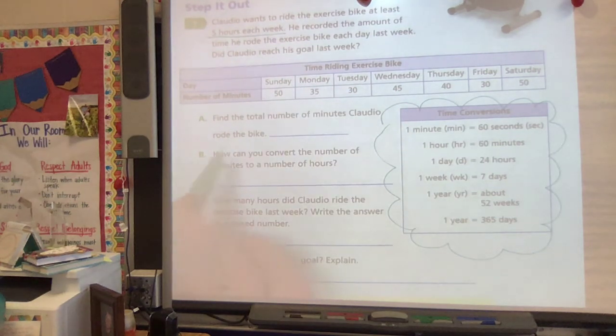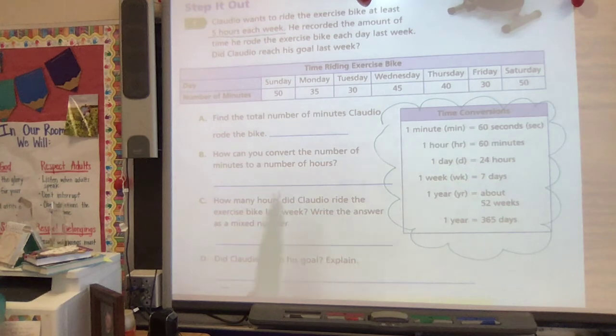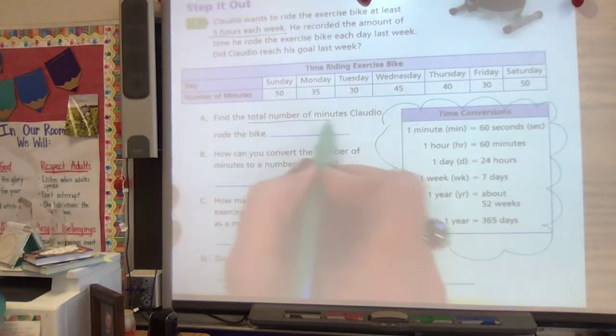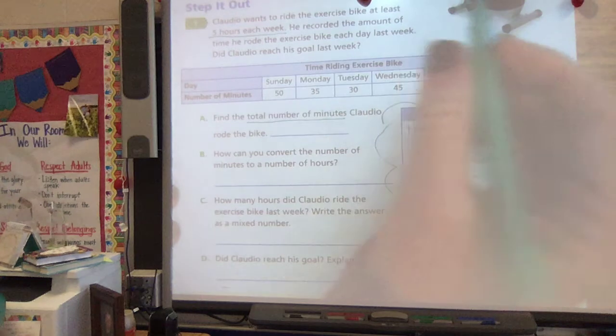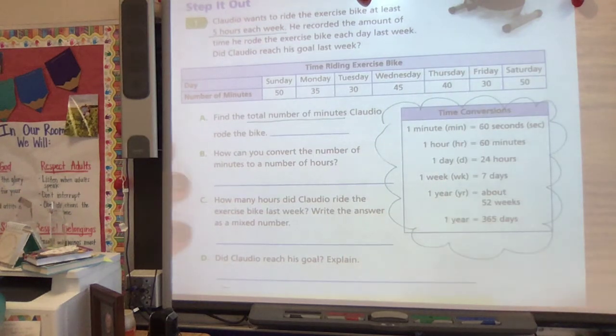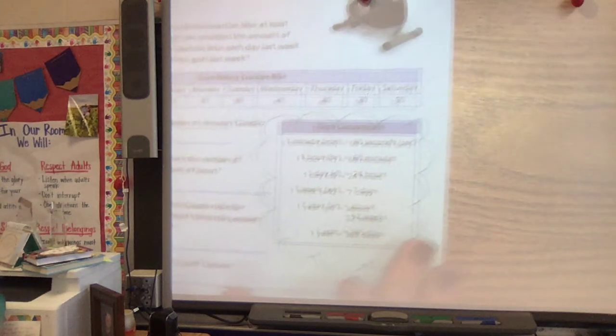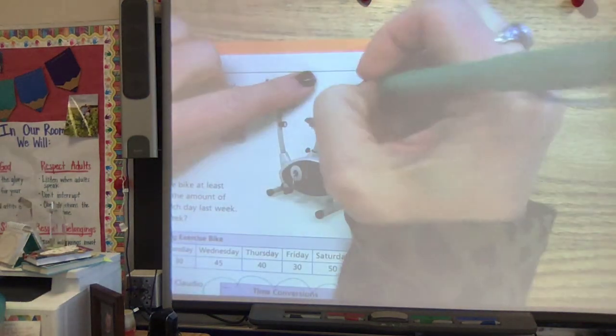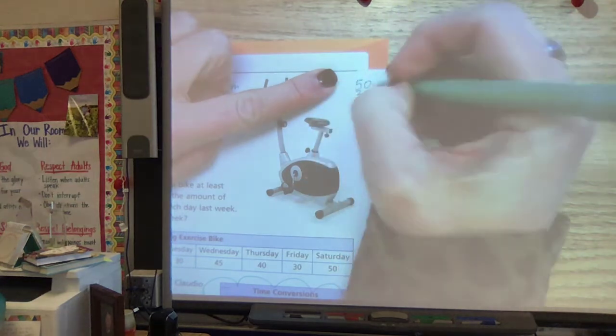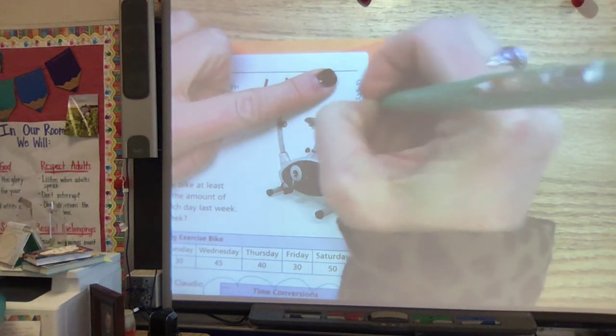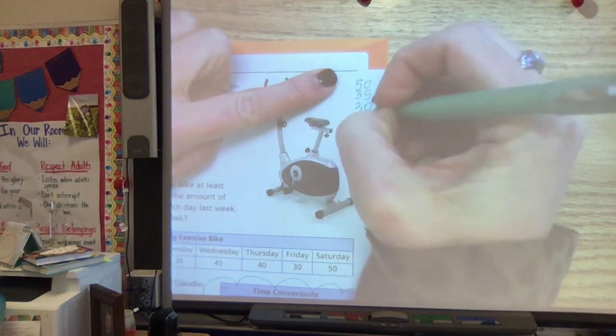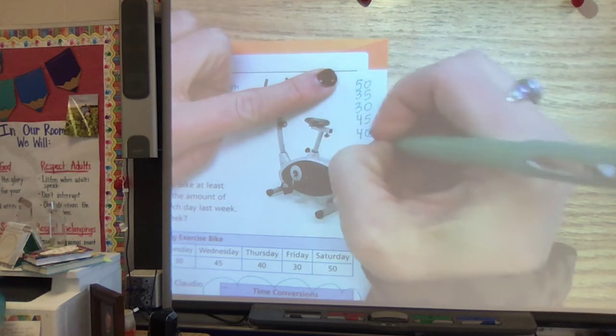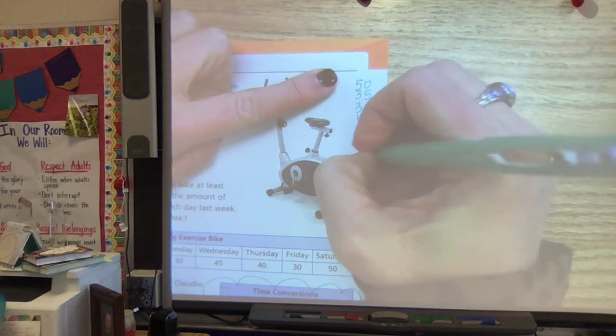So in order to figure out if he's reached his goal of five hours, we've got to know several things. First of all, let's figure out how many total minutes he rode the bike. I'm going to scoot over and use a little bit of this area up here on my paper. So I've got 50, 35, 30, 45, 40, 30, and 50.